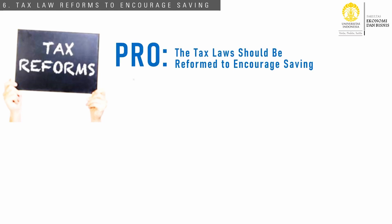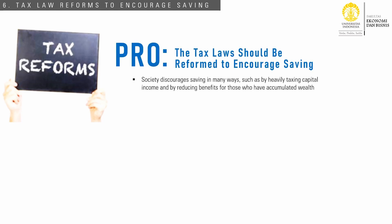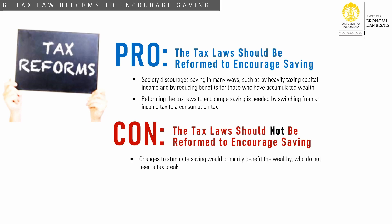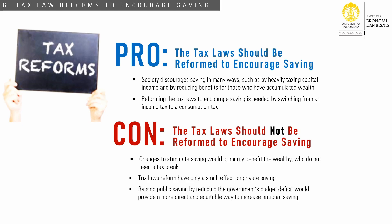The last debate is about tax laws — whether they need to be reformed to encourage saving. Advocates of tax incentives for saving point out that society discourages saving in many ways, such as by heavily taxing capital income and reducing benefits for those who have accumulated wealth. They endorse reforming tax law to encourage saving, perhaps by switching from an income tax to a consumption tax. Critics, however, argue that many proposed changes would primarily benefit the wealthy who do not need a tax break, and might have only a small effect on private savings. Raising public savings by reducing the government's budget deficit would provide a more direct and equitable way to increase national savings.